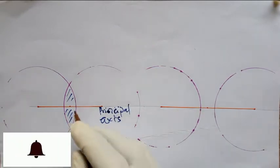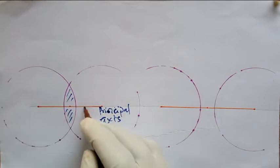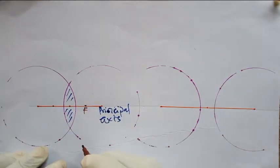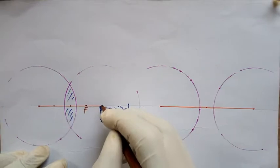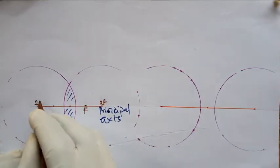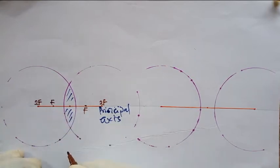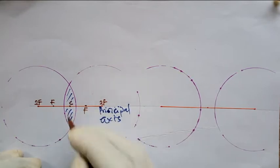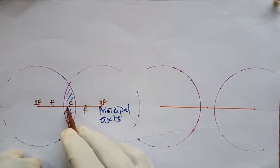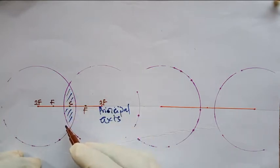From this midpoint to halfway, it becomes your principal focus. Here becomes 2F, just as here is also 2F, and here is your principal focus. Here is the optical center C, because it is the center of this optical medium. That's what's called the optical center.